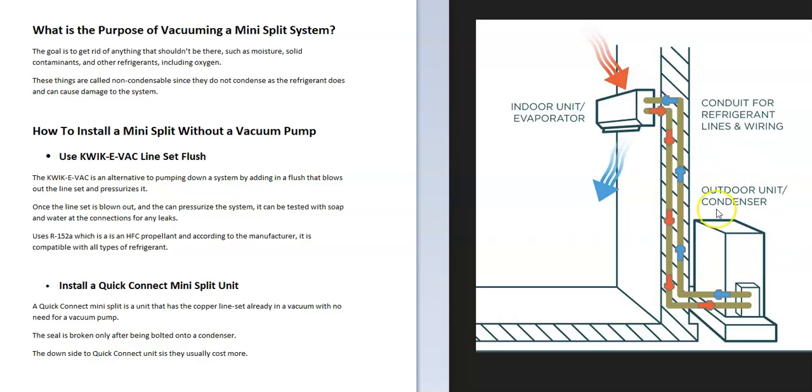Before you release the refrigerant, which is stored inside the outdoor unit, there can't be any small particles like moisture or oxygen inside, as they need to be removed because they can damage the system. Small water particles in the air can turn to acid and damage the system.